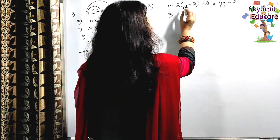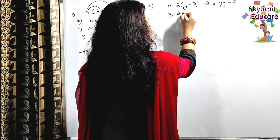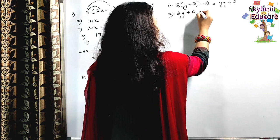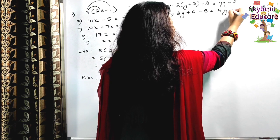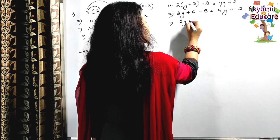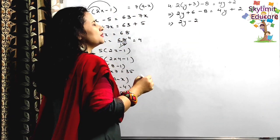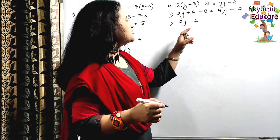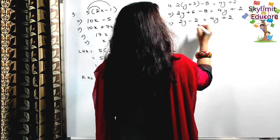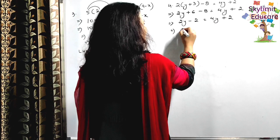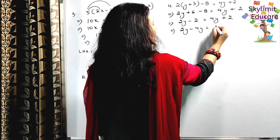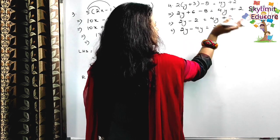Now the next question. Multiply 2 by y to get 2y, and 2 by plus 3 to get plus 6. The bracket is now open: 2y + 6 - 8 = 4y + 2. Now simplify the constants on the left: 6 - 8 = minus 2. So 2y - 2 = 4y + 2. Shift 4y to the left side — it becomes minus 4y.